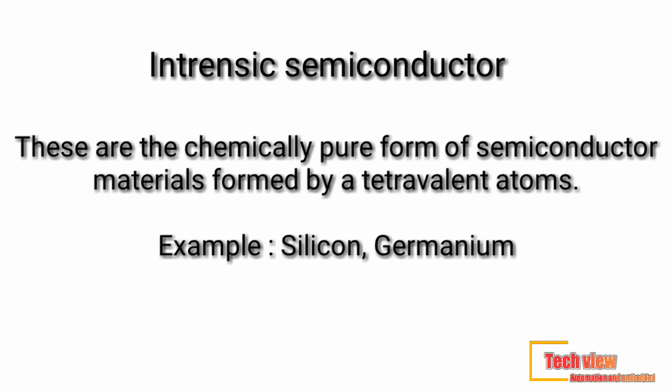Semiconductor devices such as diodes and transistors are made from a single crystal of semiconductor material, such as germanium or silicon. To make a semiconductor device, the very first step is to obtain a sample of semiconductor in its purest form. Such a semiconductor in pure form is called an intrinsic semiconductor.